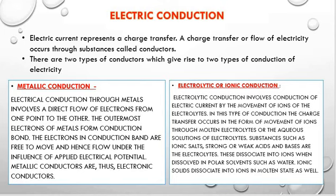Electrolytic or ionic conduction involves the conduction of electric current by the movement of ions in electrolytes. In this type of conduction, charge transfer occurs in the form of movement of ions through molten electrolytes or aqueous solutions of electrolytes. Substances like salts, strong or weak acids, and strong or weak bases are electrolytes. These compounds dissociate into ions when dissolved in water, and the ions conduct electricity. Conduction through electrolytic conductors involves the transfer of matter from one part of the conductor to another, meaning the current is accompanied by chemical change.